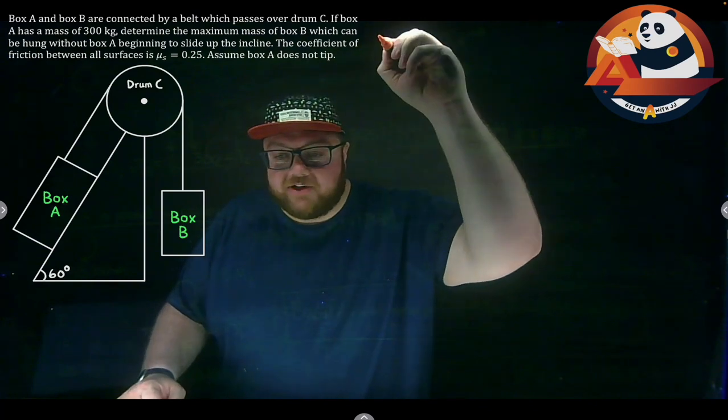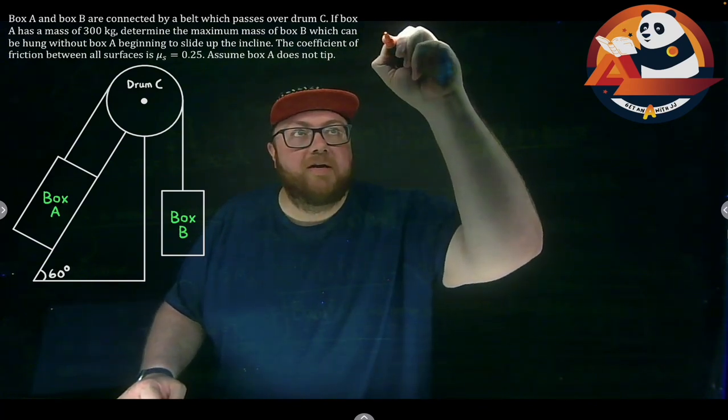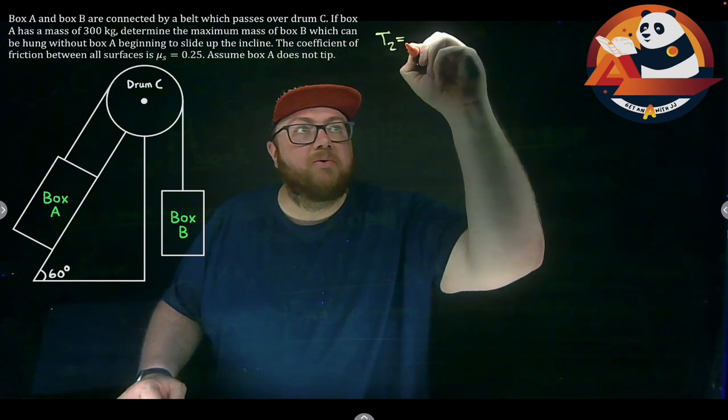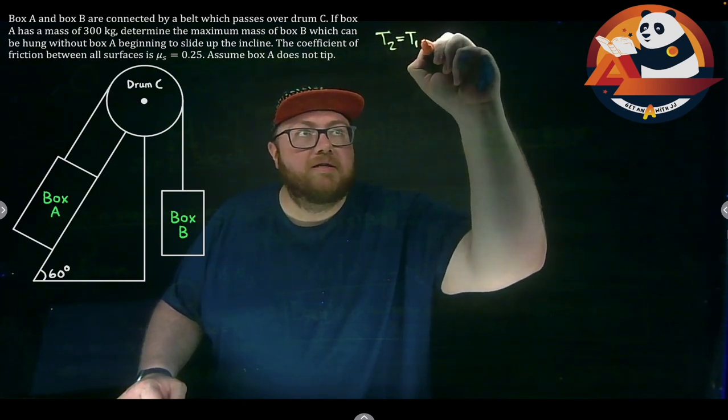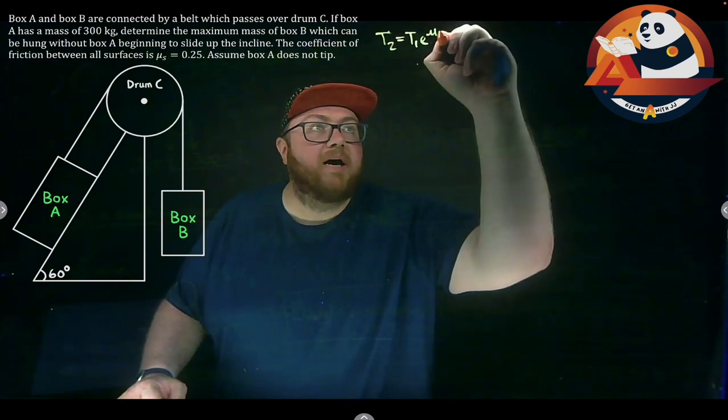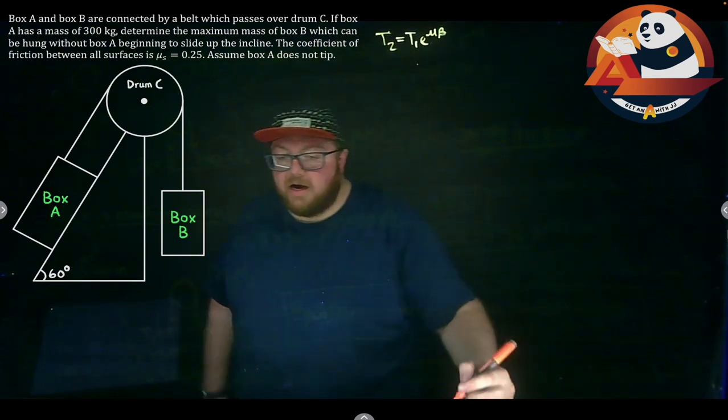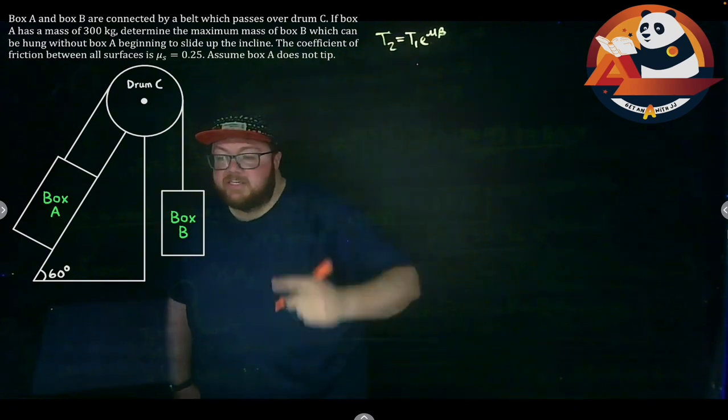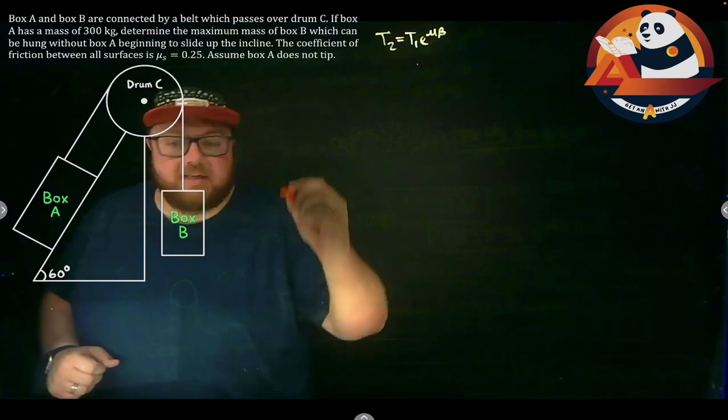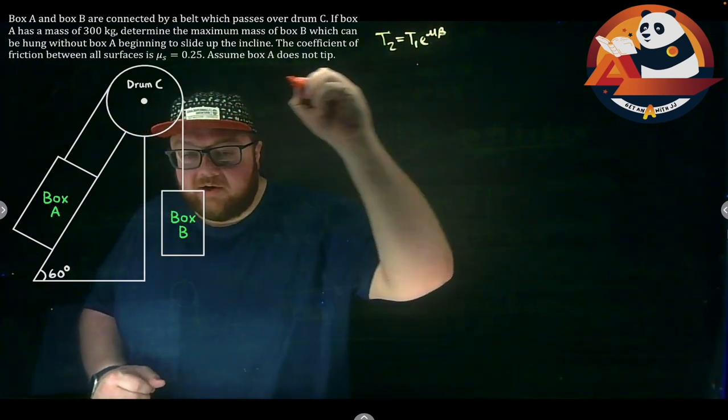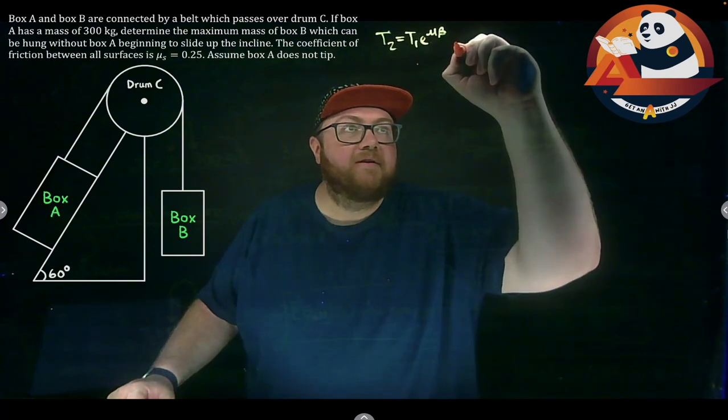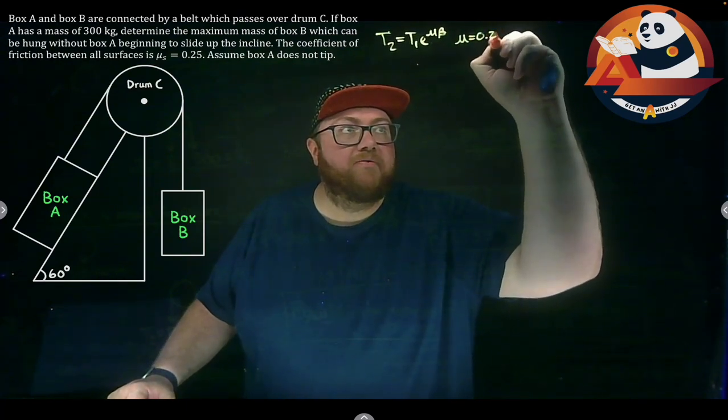And again, if we're tackling belt friction, let's get our equation written down. We know our general equation is T2 equals T1 times E to the mu, our coefficient of friction, times beta. We'll have to deal with T2 and T1 as we go through everything. Mu, we know that one was given to us. Mu for this is 0.25.